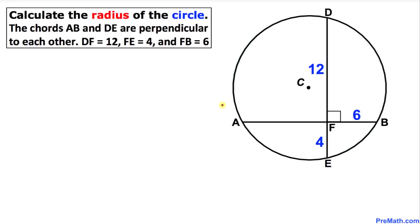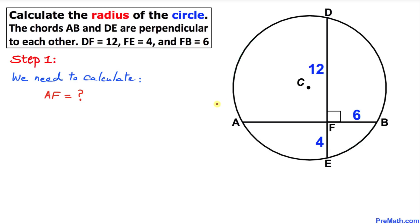Welcome to pre-math. In this video tutorial, we are going to calculate the radius of a circle. As you can see in this figure, the chords AB and DE are perpendicular to each other. DF is 12 units, FE is 4, and FB is 6. Let's go ahead and get started with our solution. Our very first step is to calculate the AF part of the chord.